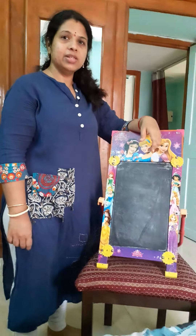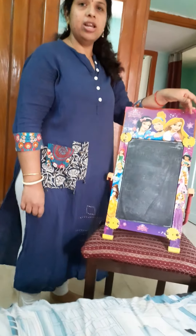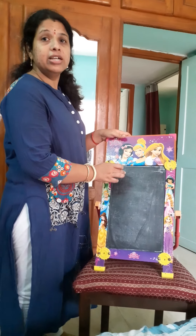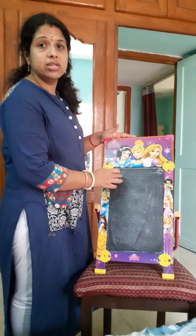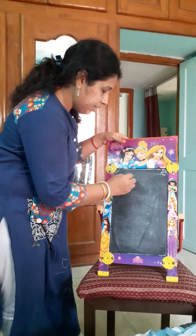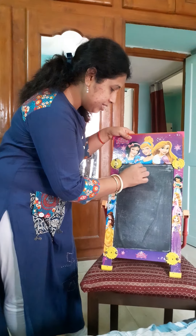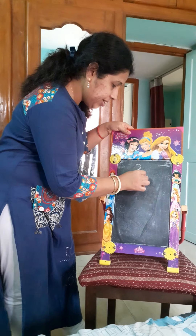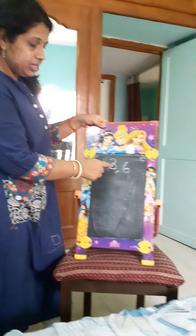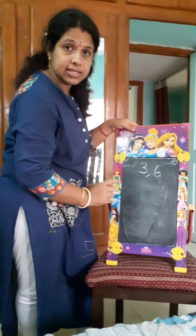Hello children. Today we have learnt in online class how to form a two-digit number. First, suppose I will give you two digits — three and six. These are two different digits, three and six.